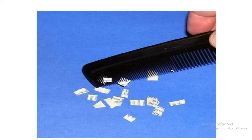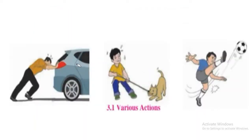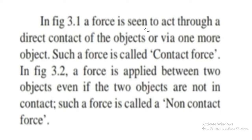This is because the comb has an electrostatic charge and there is an induced opposite charge on the pieces of paper and the pieces stick to the comb. In this figure, a force is seen to act through a direct contact of the objects or via one more object. Such a force is called contact force.